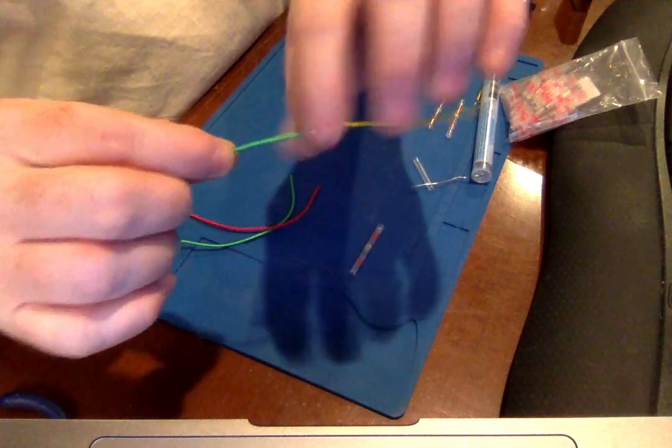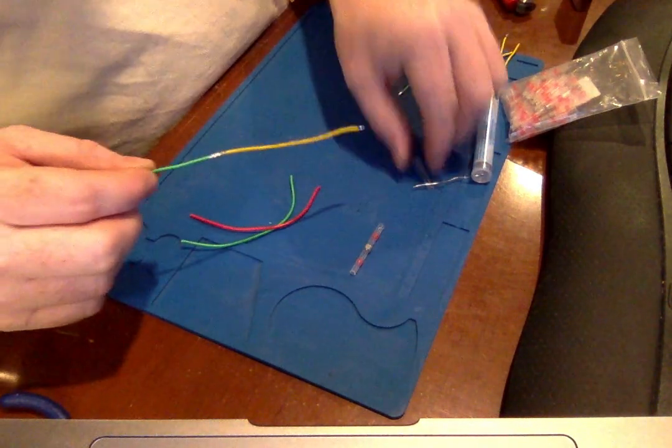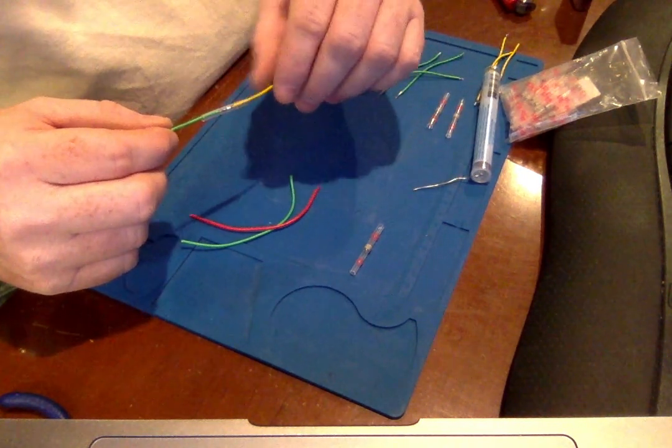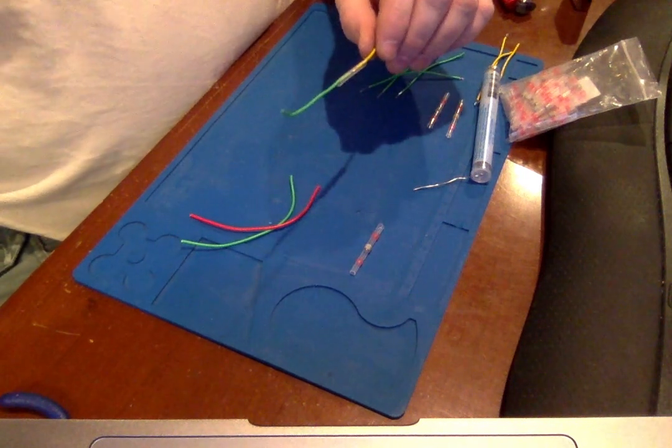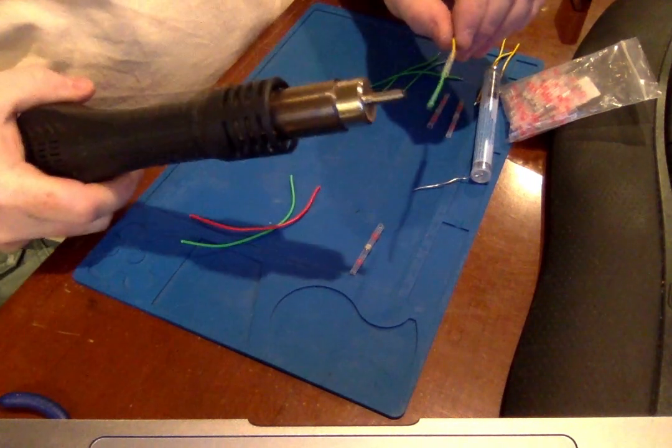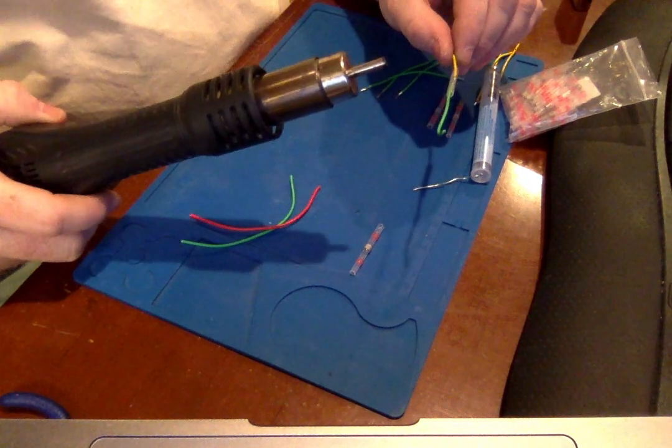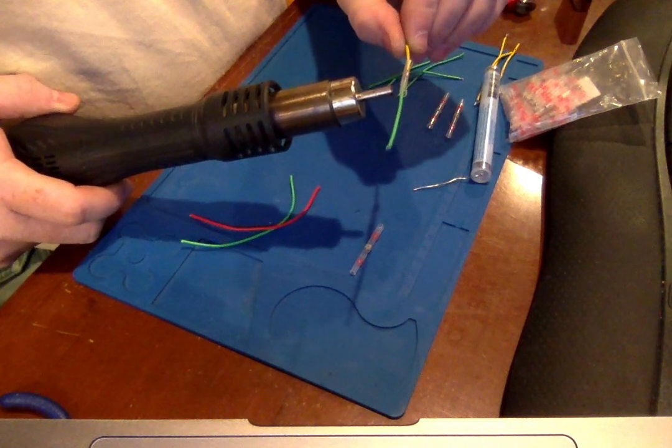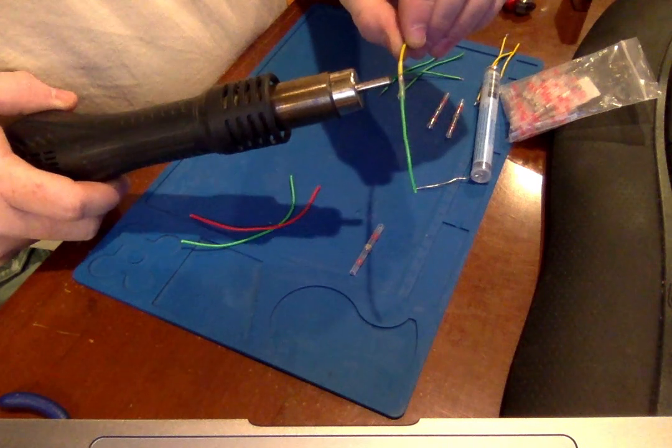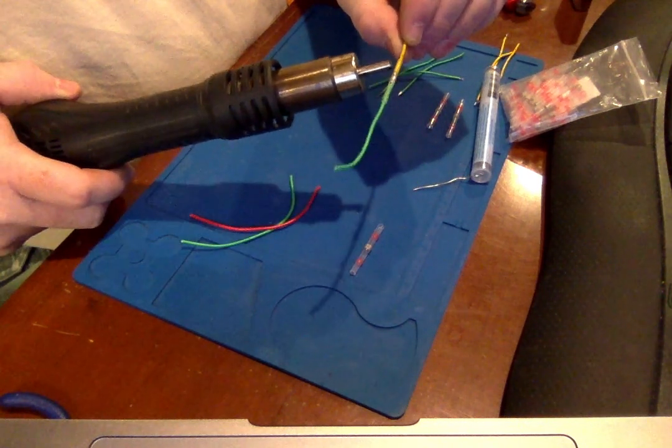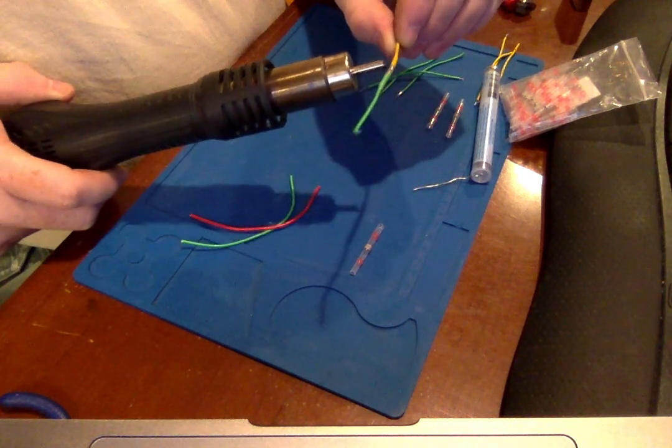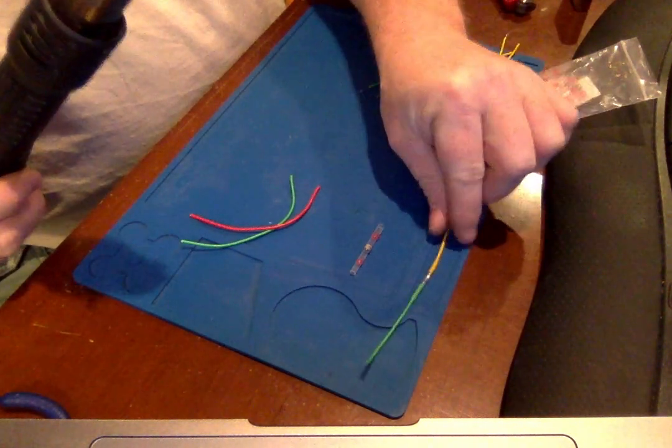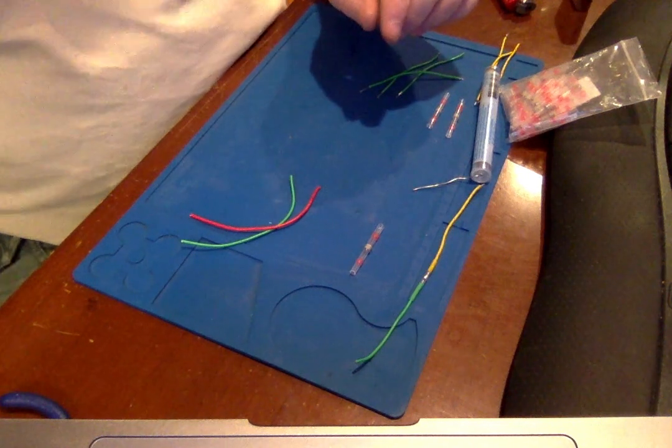So there's my traditionally soldered wire, and I'm gonna use my heat shrink here. And this is a heat gun, just like one of the big hairdryer looking ones, it just happens to be part of my soldering station. So there we go. Okay, so that's a traditionally spliced wire.